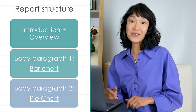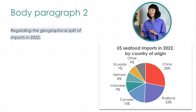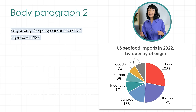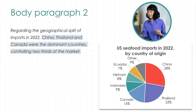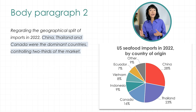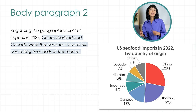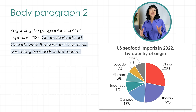Let's move on to body paragraph 2, describing the pie chart. 'Regarding the geographical split of imports in 2022' — this phrase introduces what the paragraph is about and helps link paragraphs together, which is a must for a band 7 score. 'China, Thailand and Canada were the dominant countries, controlling two-thirds of the market.' We have a lot of countries on the chart, but the larger the share, the more important the country is. I've calculated that their combined share is 67%, or two-thirds. Please note that in this fraction, we need the hyphen and the denominator — the second number — is plural. We've described the key findings; now we need to support this with figures from the chart.